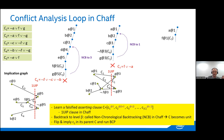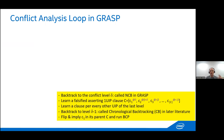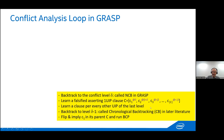GRASP works differently. The first step is backtracking to the conflict level delta. Unlike CHAFF, GRASP may find a conflict lower than the current decision level. GRASP learns the first UIP clause (similar to CHAFF) and also learns additional clauses for every other UIP. Then it backtracks chronologically to level delta minus one — this is chronological backtracking in modern terminology.